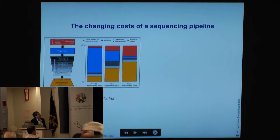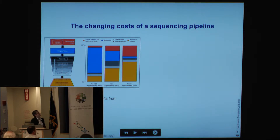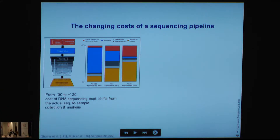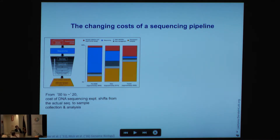With next-gen sequencing, the sequencing cost portion has shrunk, and now much more of the cost goes into downstream analysis or sample acquisition. As the exponential scaling of sequencing technology continues, we expect the cost of sequencing itself to go nearly to zero, and proportionally most of the cost will be taken up by downstream analysis or sample acquisition.